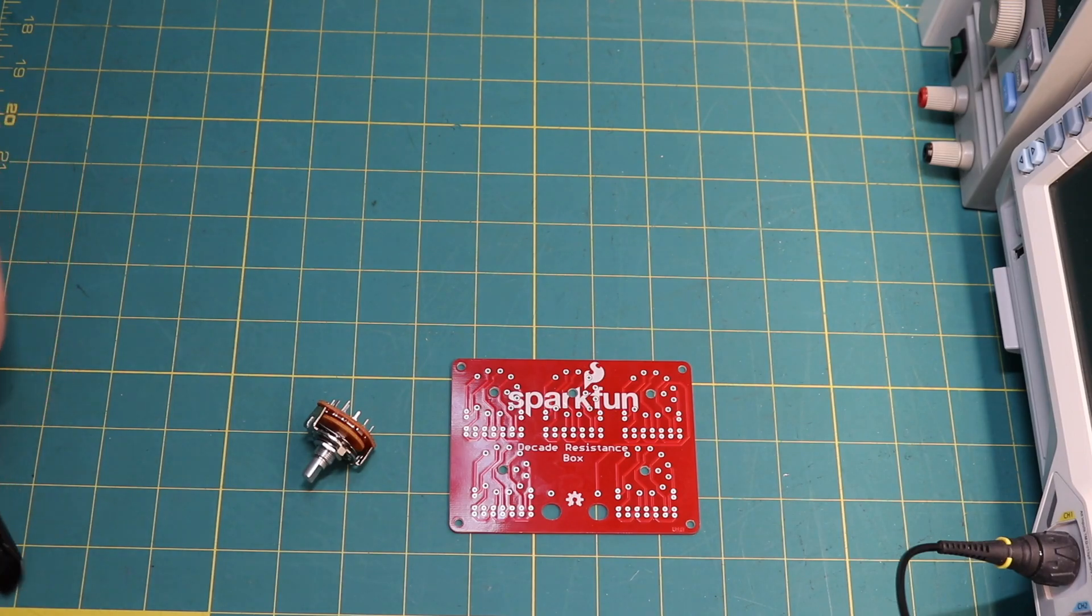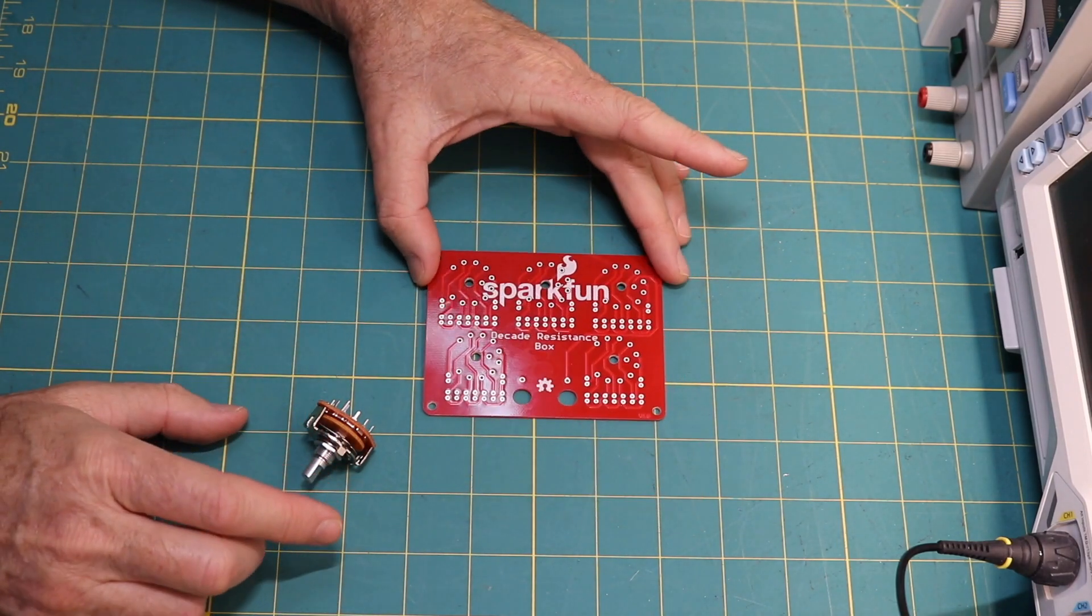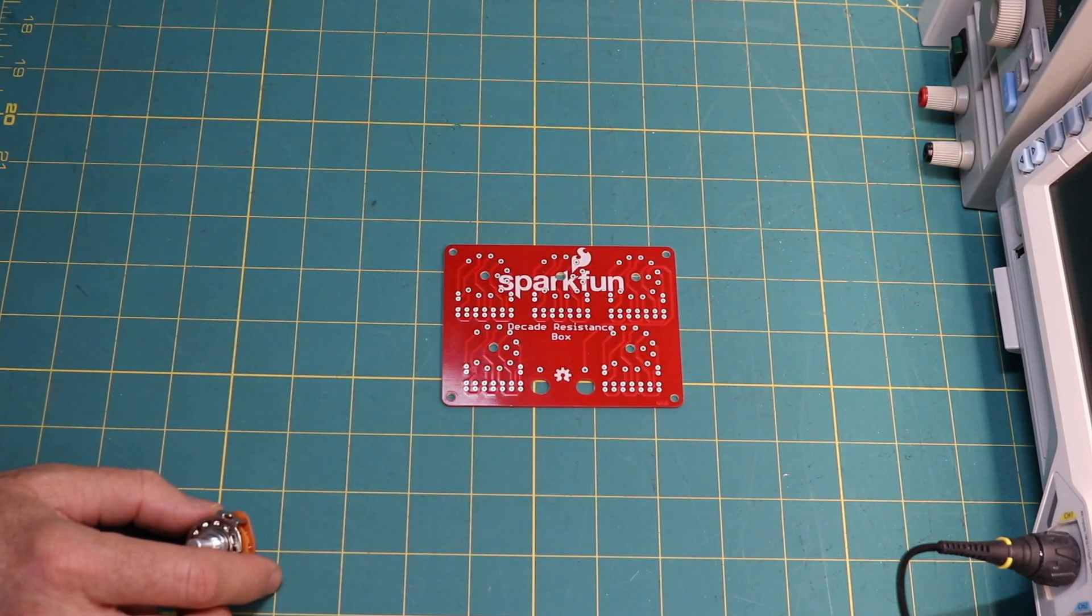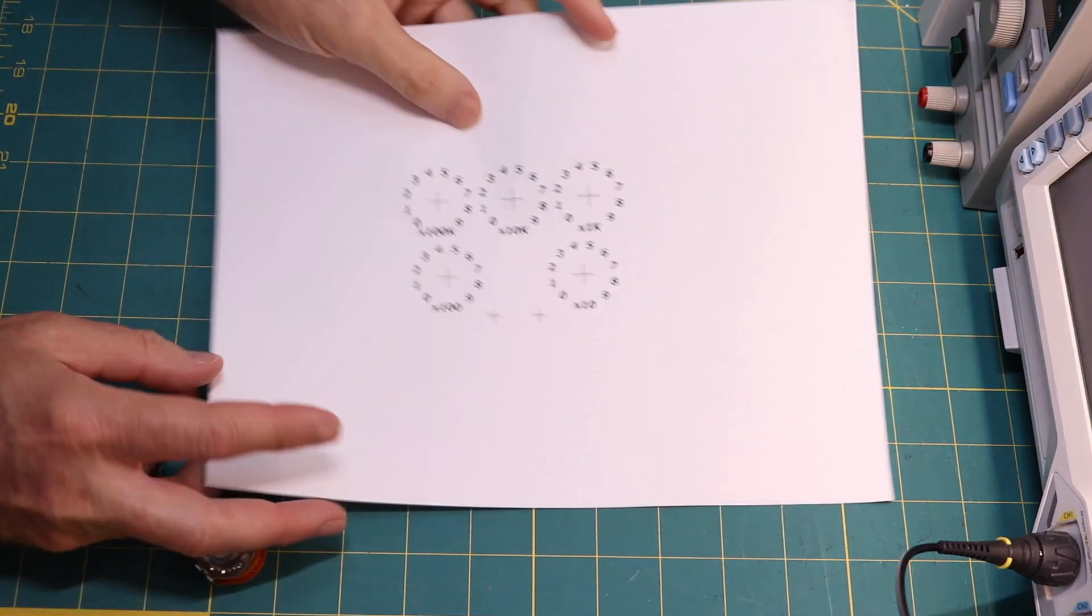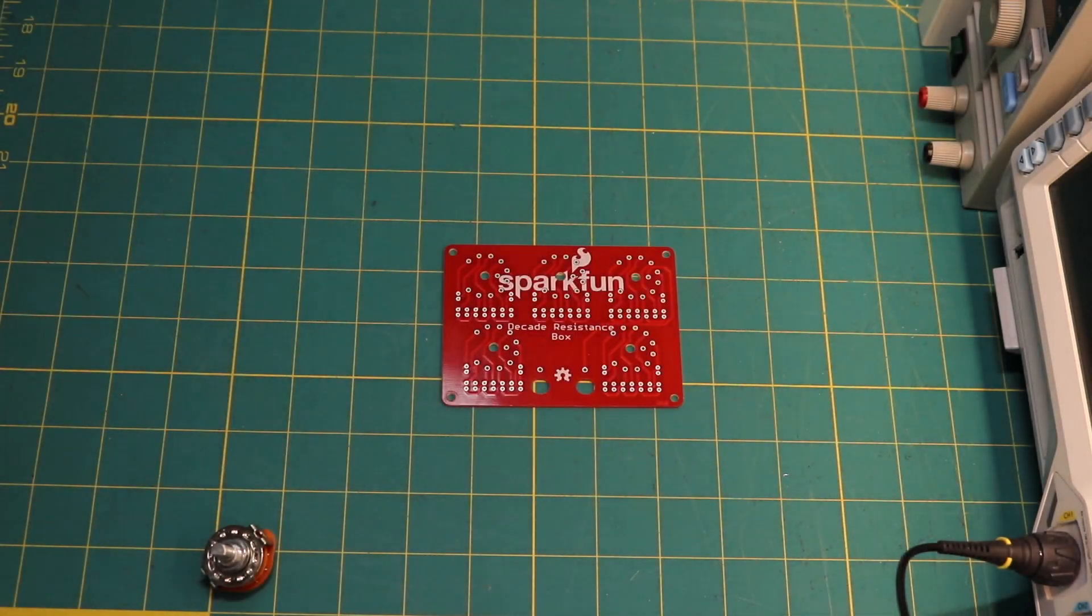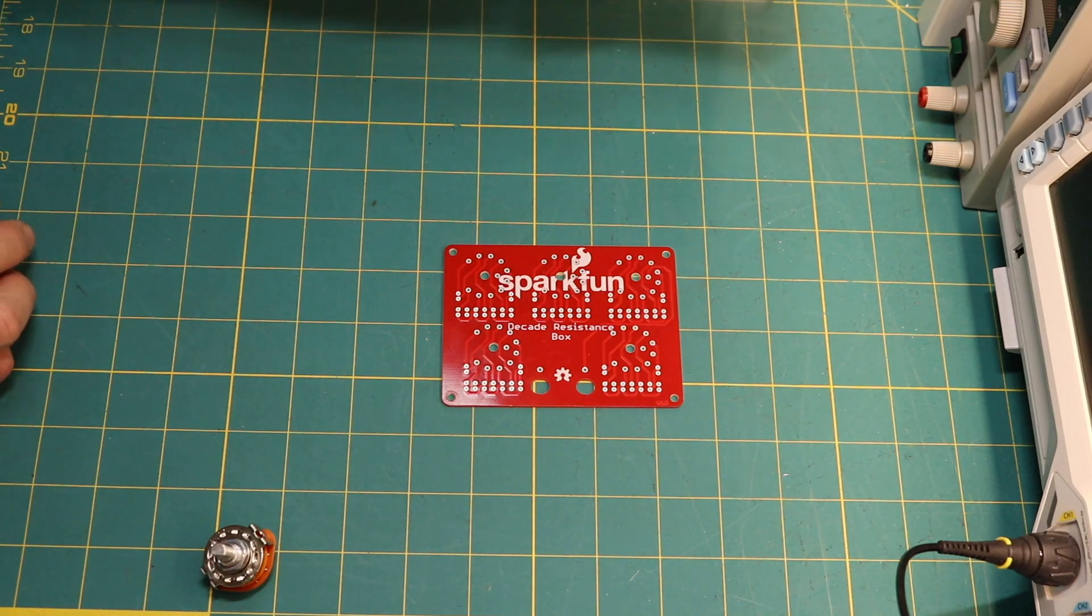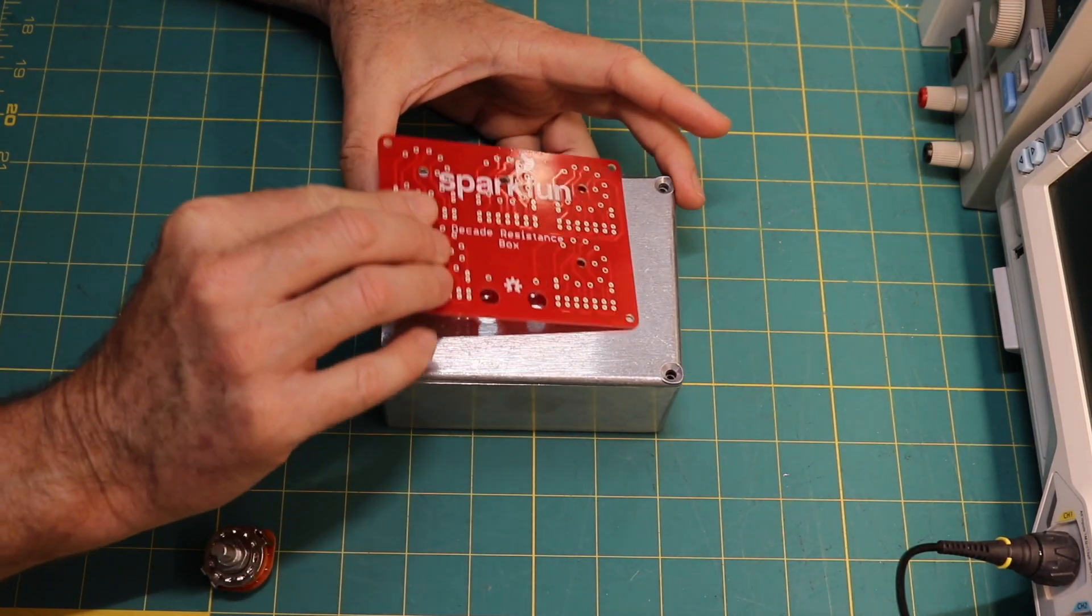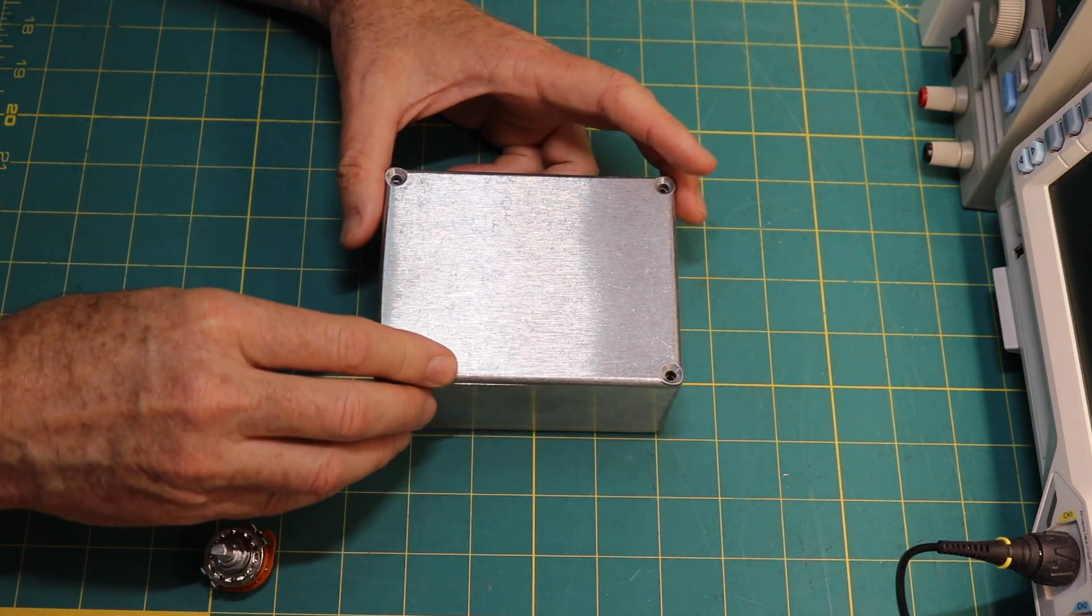You could just leave it bare, but then you don't really have any place to put the numbers. They give you online, you can print out the number sheet. I think I'm going to do something nicer than just printed paper. So I also picked up a project box that will fit nicely in there. When we're done, I think it's going to look like a good project.